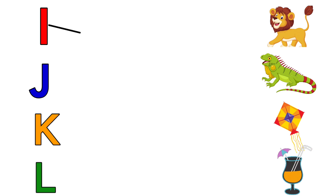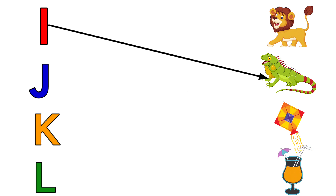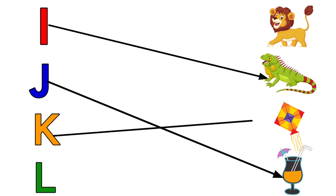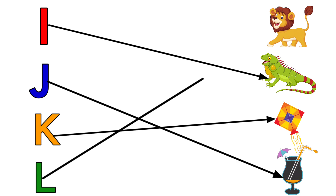I for Iguana, J for Juice, K for Kite, L for Lion.